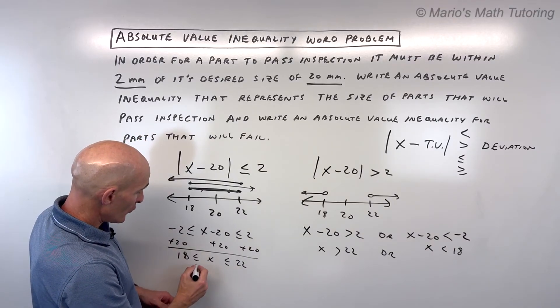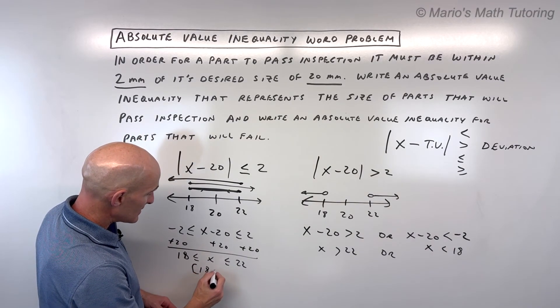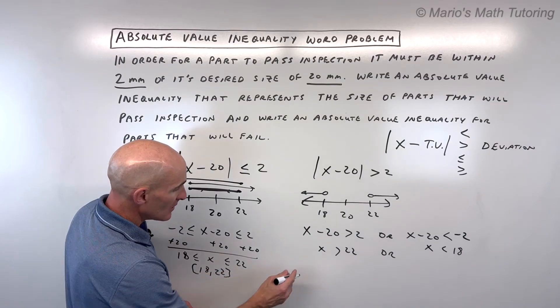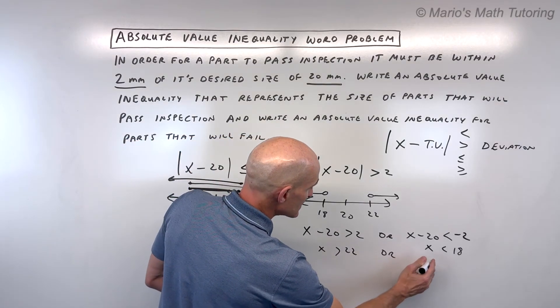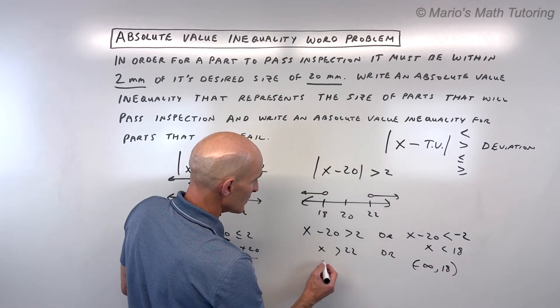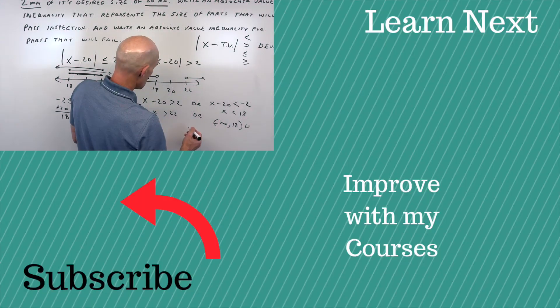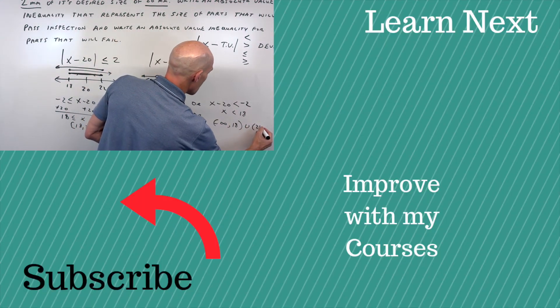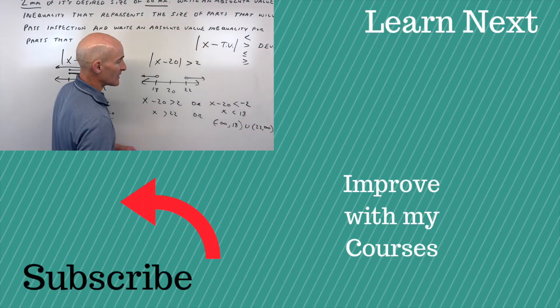If you want to write this in interval notation, you would write it with brackets: [18, 22]. Here, less than 18 would be negative infinity to 18, not including, and this would be union from 22, not including, to positive infinity.